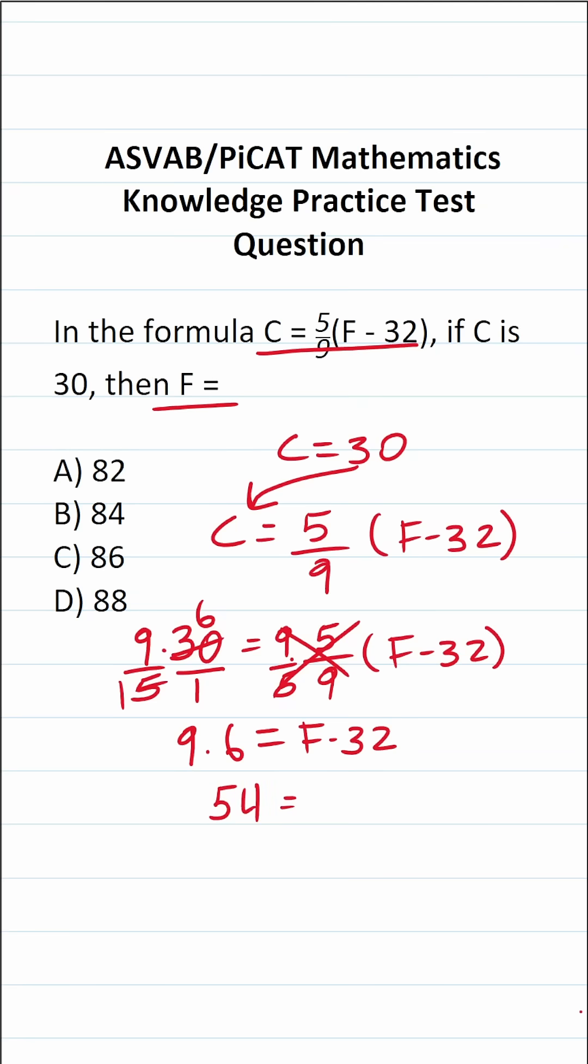So this becomes 54 equals F minus 32. Again, to get F by itself, we're going to add 32 to both sides of the equation. In doing so, this crosses out, leaving me with F over here.